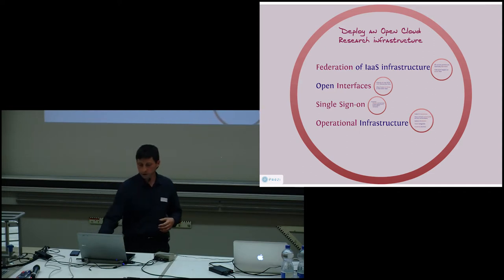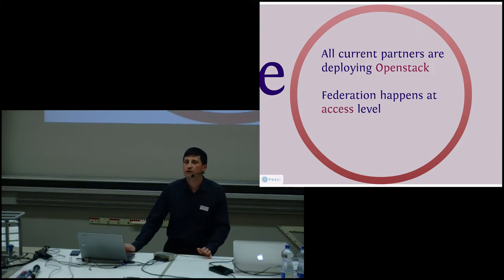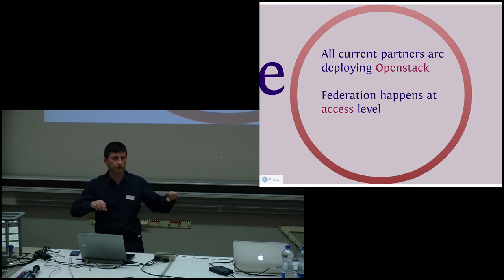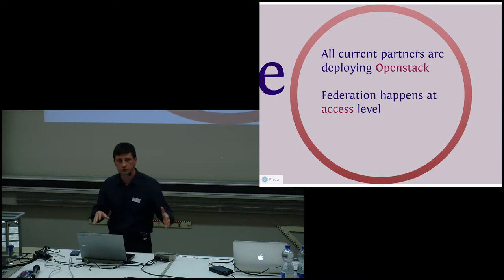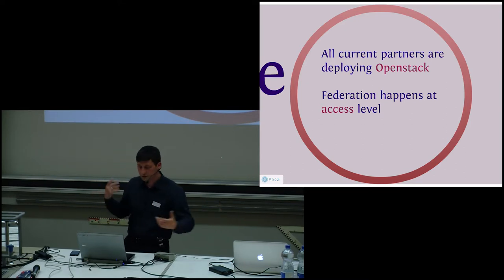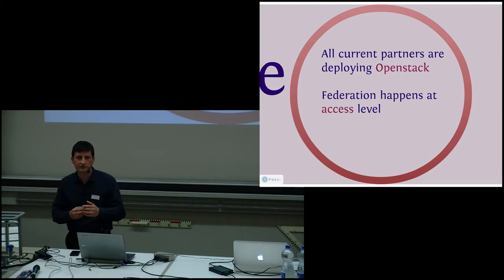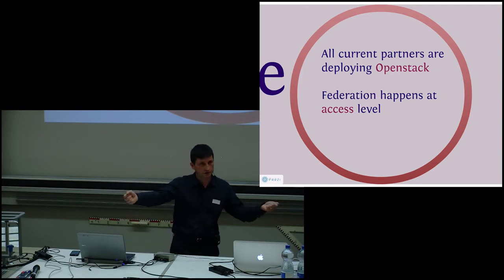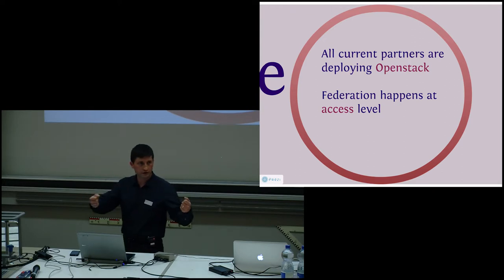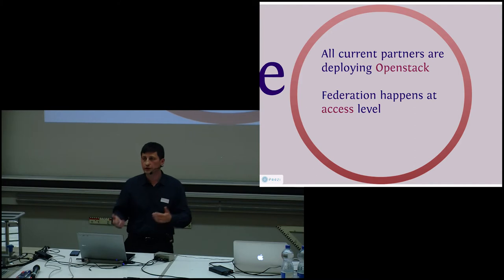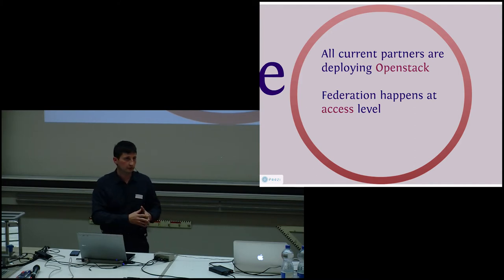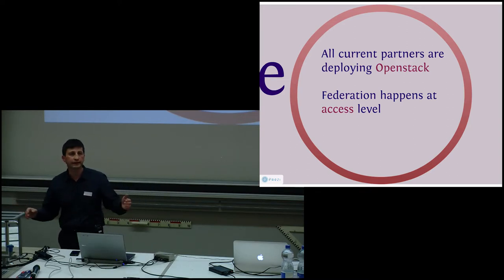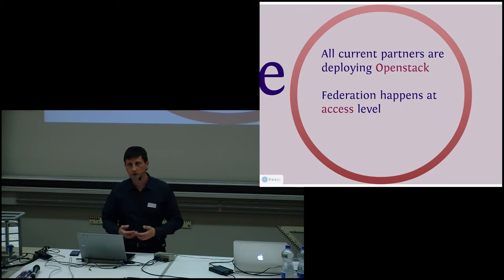All the partners collaborating with us are deploying OpenStack, so we are trying to present this federation of OpenStack instances scattered around a few partners in Switzerland — not as a single infrastructure. The federation doesn't really happen at the service level; it happens at the access level, so we allow users to access the various instances of this infrastructure based on our use case policy. We evaluate the use cases and decide which fits better, and having a common interoperability layer — which is OpenStack in this case — greatly simplifies our task. We stress on open interfaces because the majority of use cases we support make use of the infrastructure service from a programmatic point of view, so having open interfaces and standardized APIs is a must.